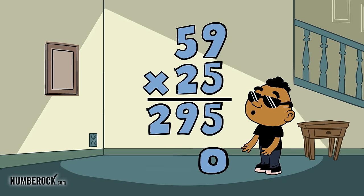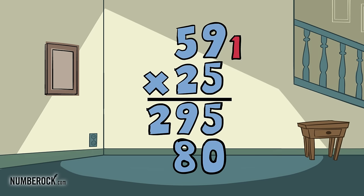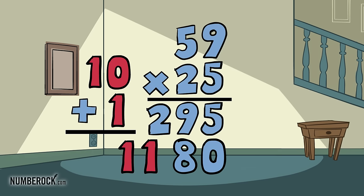We write a zero when we multiply the tens. 2 times 9 is 18, write 8 plus 1 carries. 5 times 2 equals 10, then add the 1 and you get 11.